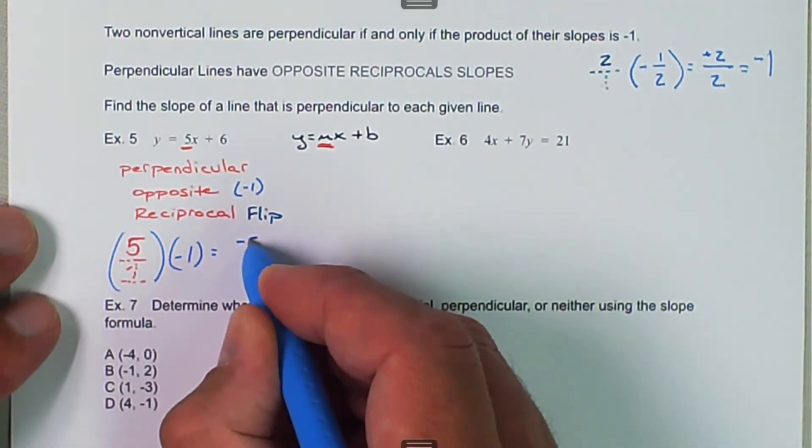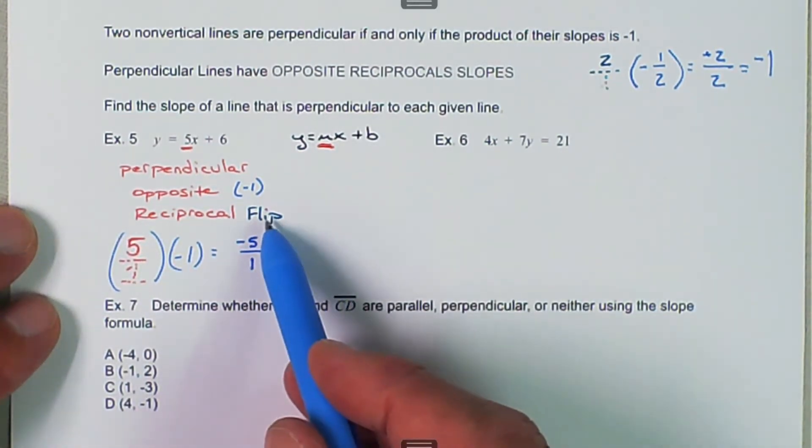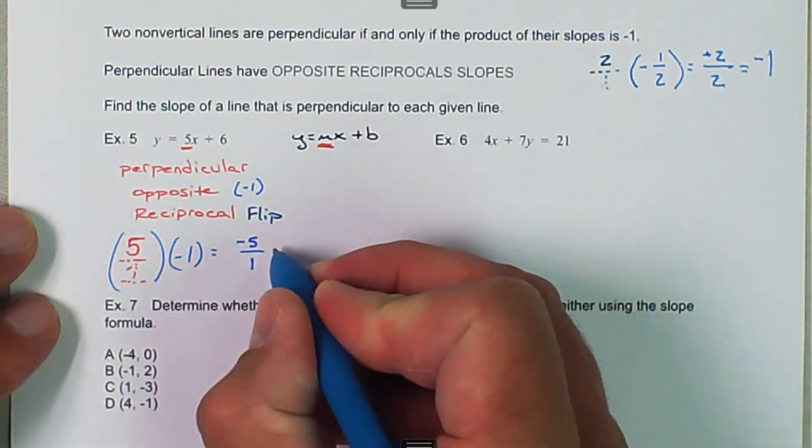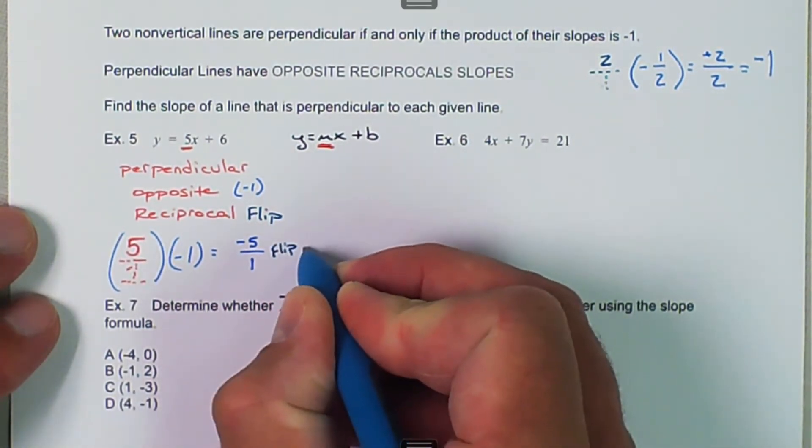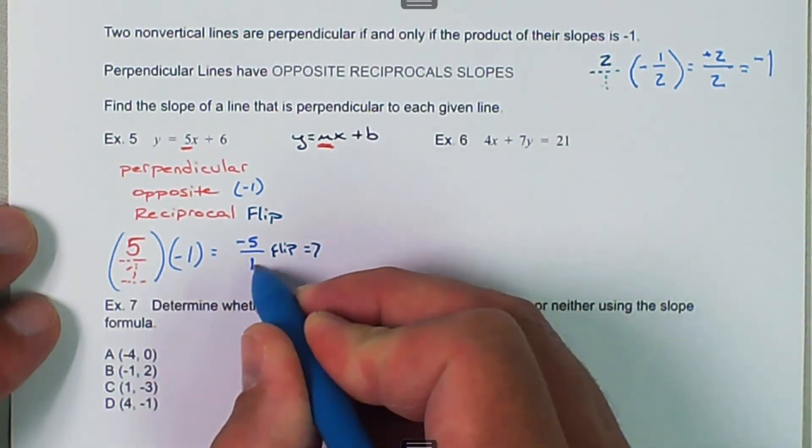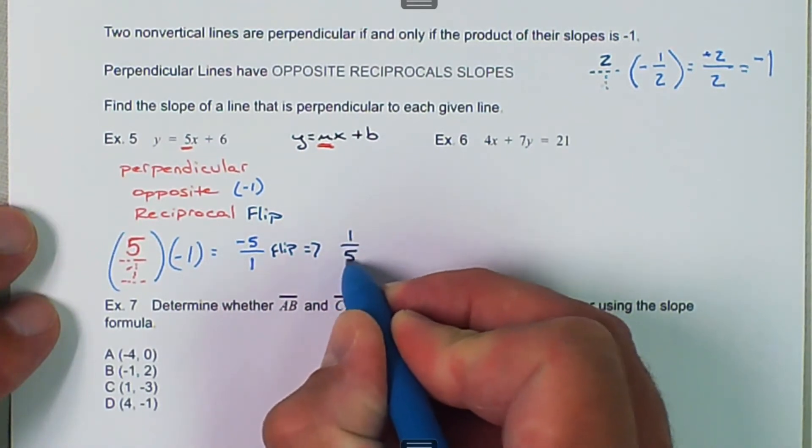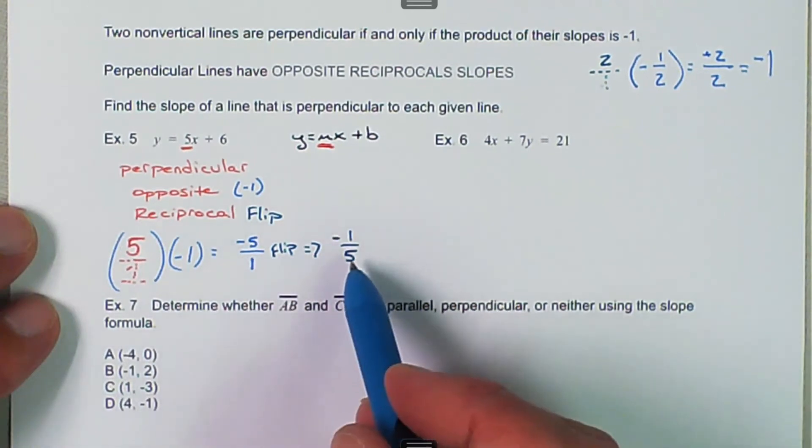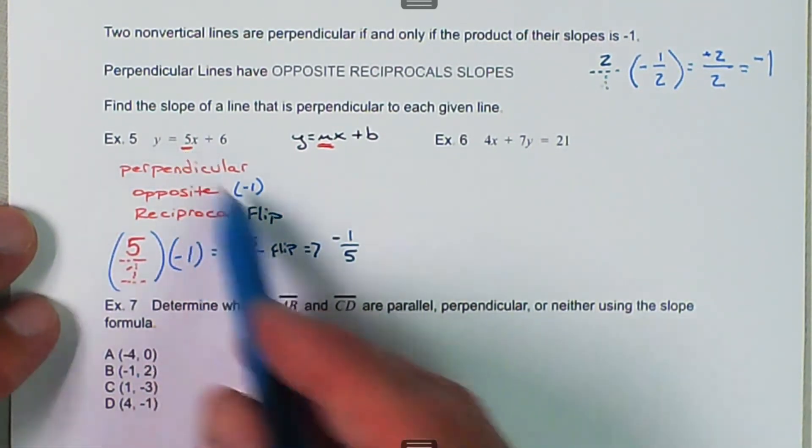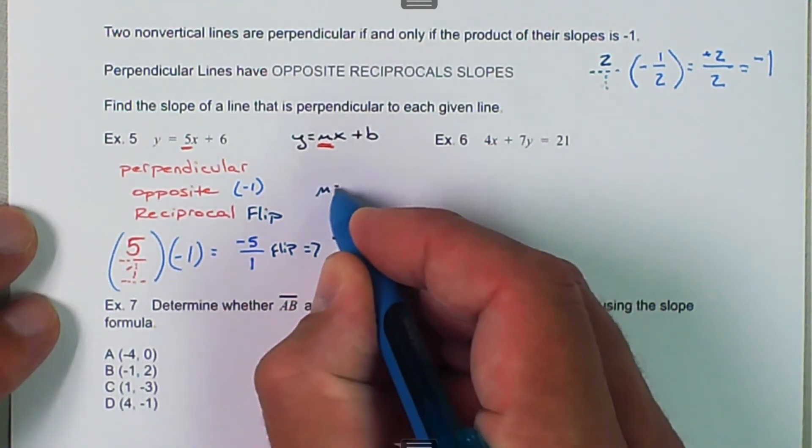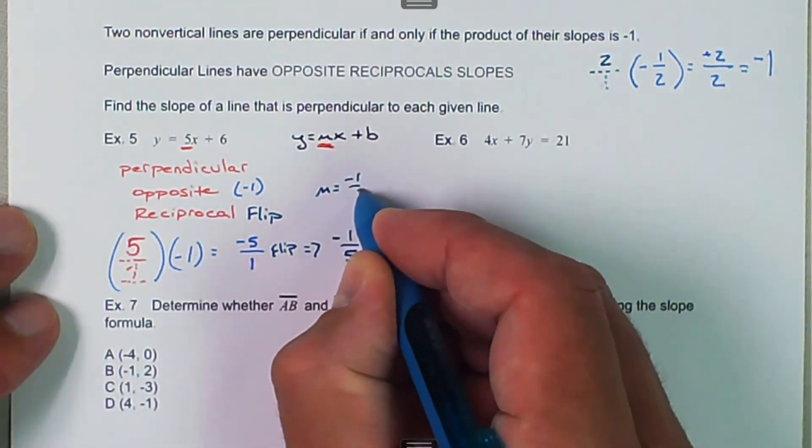So now that becomes negative 5 over 1. And then the reciprocal part says I have to flip it. So I'm going to take this and flip it. And now that becomes the 1 goes in the numerator and the 5 goes in the denominator, and we're still going to keep that sign. So then for this one our slope was 5, but the perpendicular slope is negative 1 over 5.